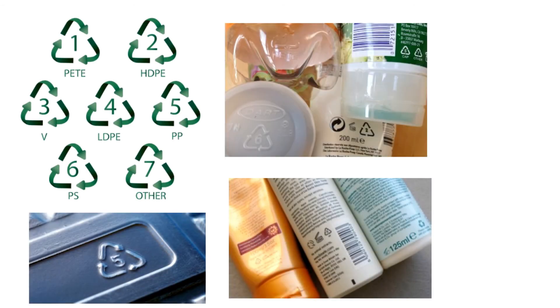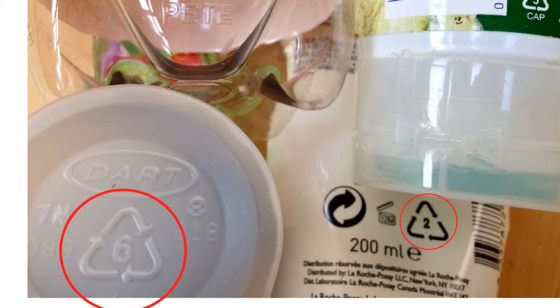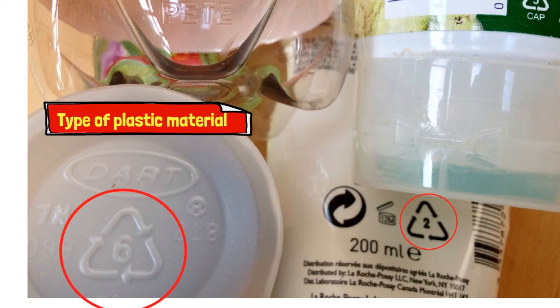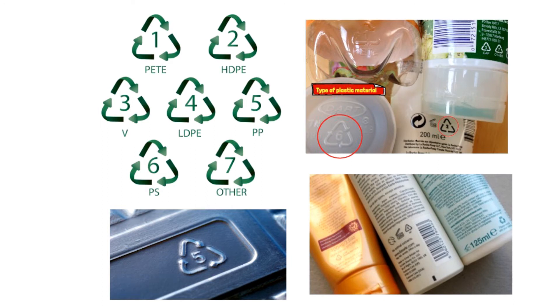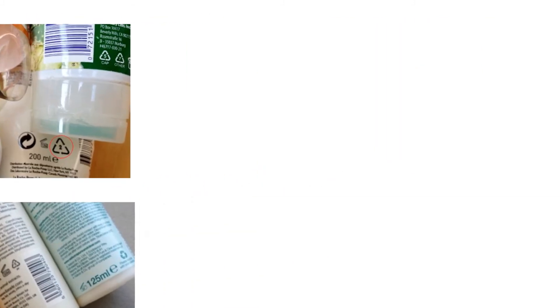The number inside the chasing arrow indicates the type of plastic used to make the product you are using. It is not a recycling method — it indicates the type of plastic the product is made from. We generally see this symbol on any product and call it a recycling symbol, but it only indicates the type of plastic material used.